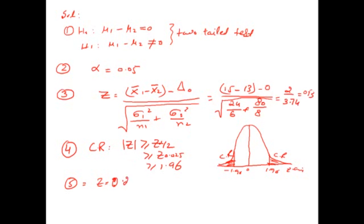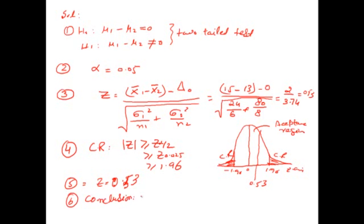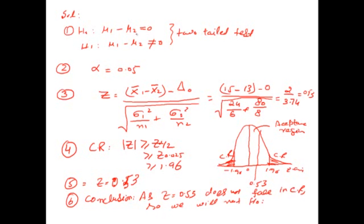The calculated value 0.53 falls near zero, well within the acceptance region. As the calculated value 0.53 does not fall in the critical region, we will not reject H-naught. This means there is no difference between the means of the two populations — mu1 equals mu2.